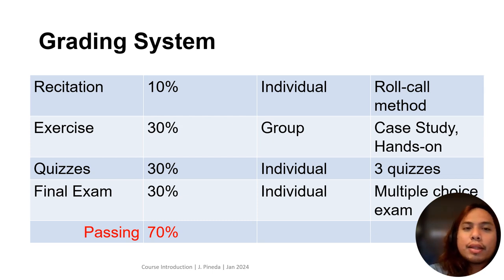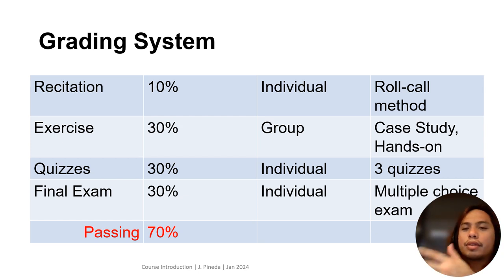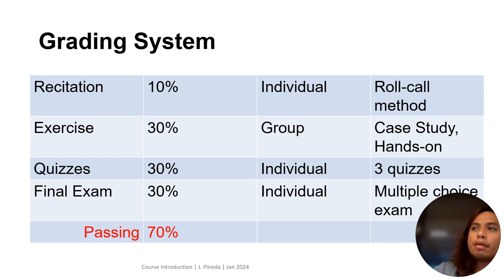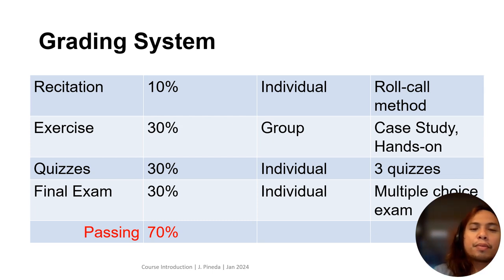Let's go to the grading system. The grading system is very straightforward — we have four components. The first component is recitation, which is done individually and every meeting. We do our discussions, I have my lecture, and you need to engage in the discussion. It will be in a roll call method — I'll call each student present in class, and it will be your chance to speak and answer a question. You need to participate in each class to get a recitation score.